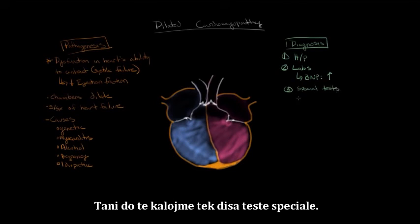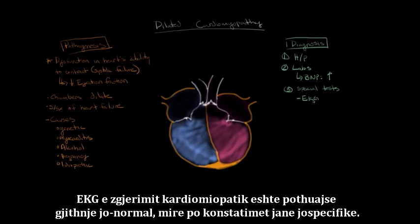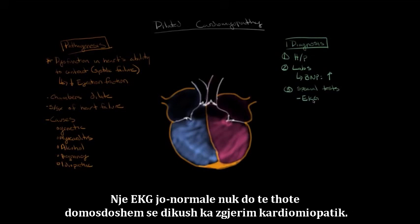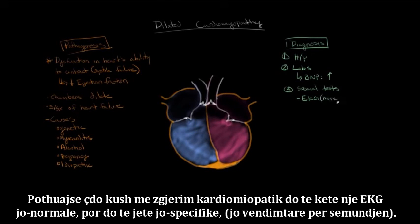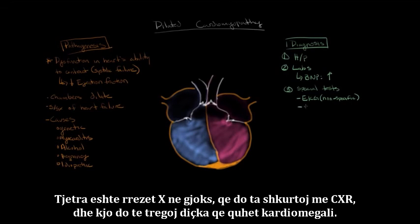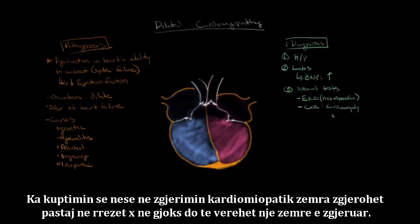Moving to special tests: the first is an EKG. In dilated cardiomyopathy, the EKG is almost always abnormal, but the findings are nonspecific. So an abnormal EKG doesn't necessarily confirm dilated cardiomyopathy, but a normal EKG will almost rule out the disease. Next is a chest x-ray, or CXR, which will show cardiomegaly — an enlarged heart. It makes sense that if the heart gets enlarged in dilated cardiomyopathy, you'll see a big heart on the chest x-ray.